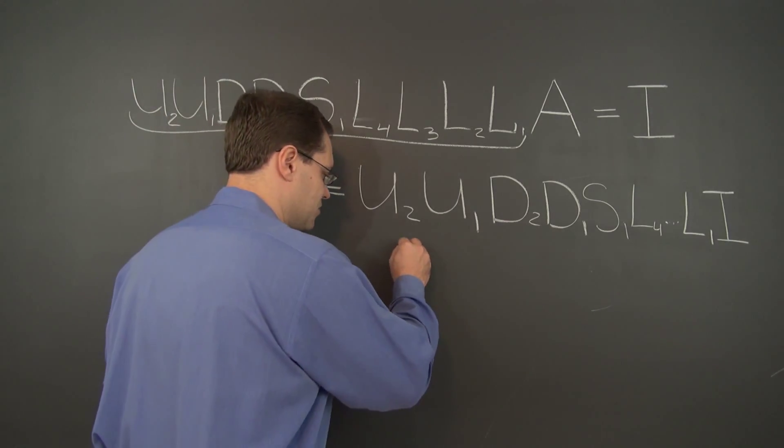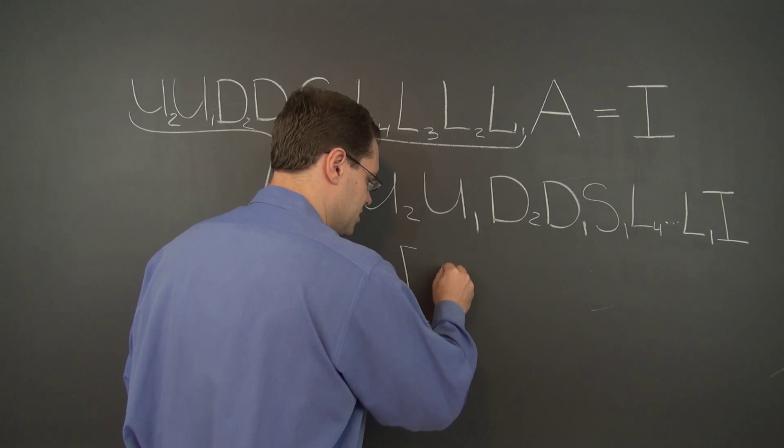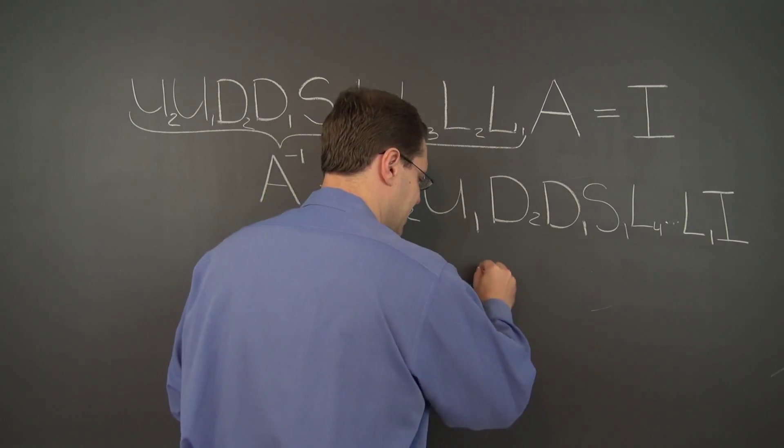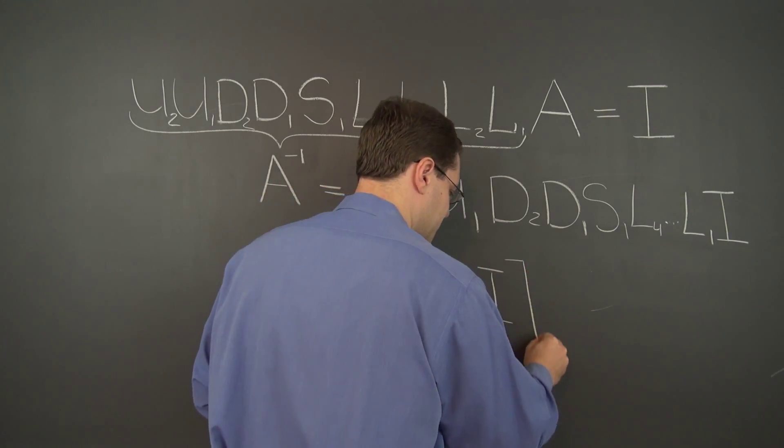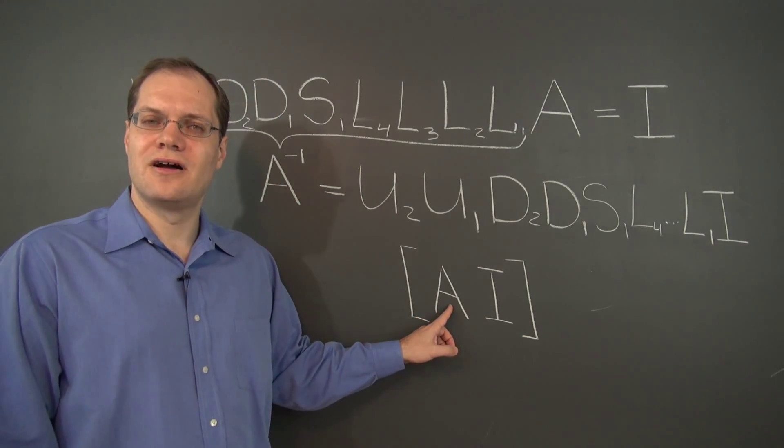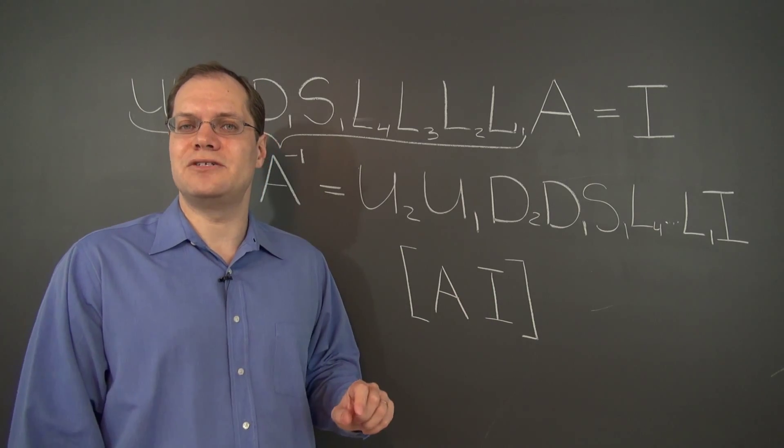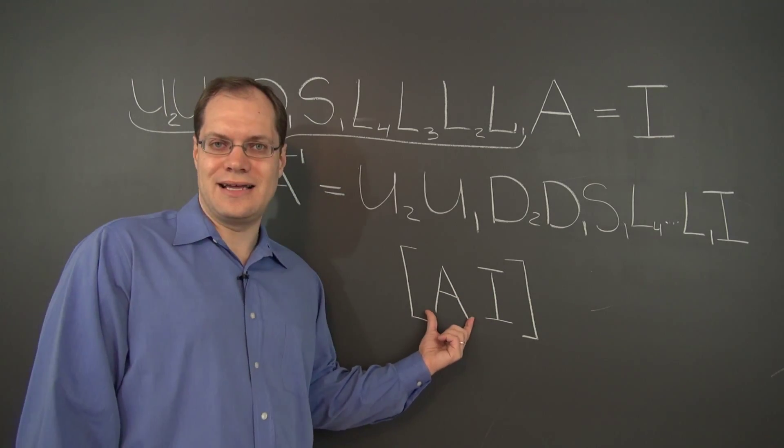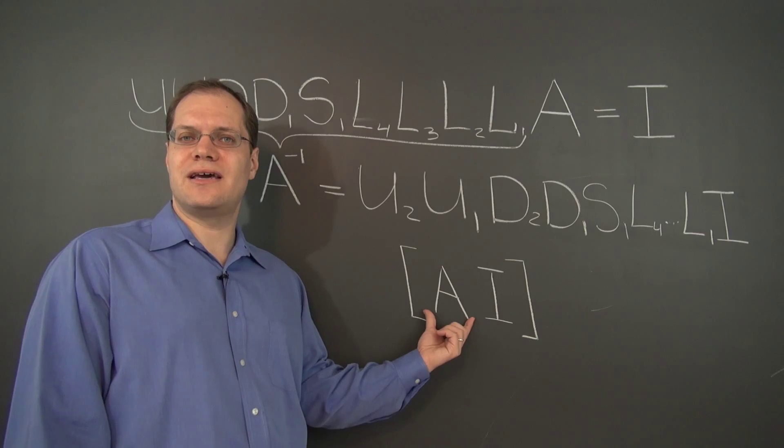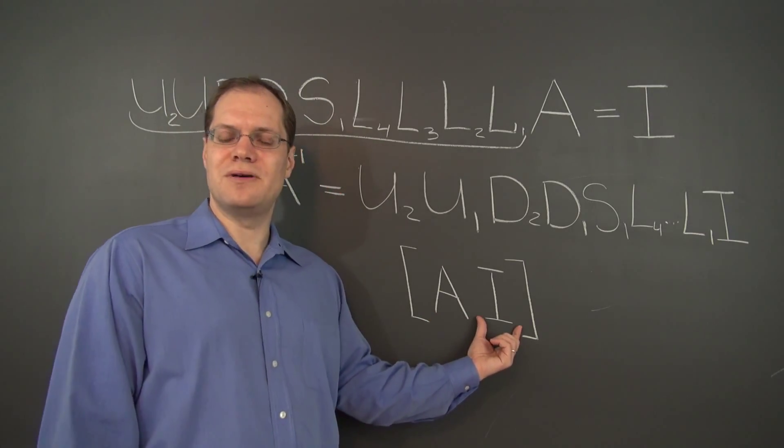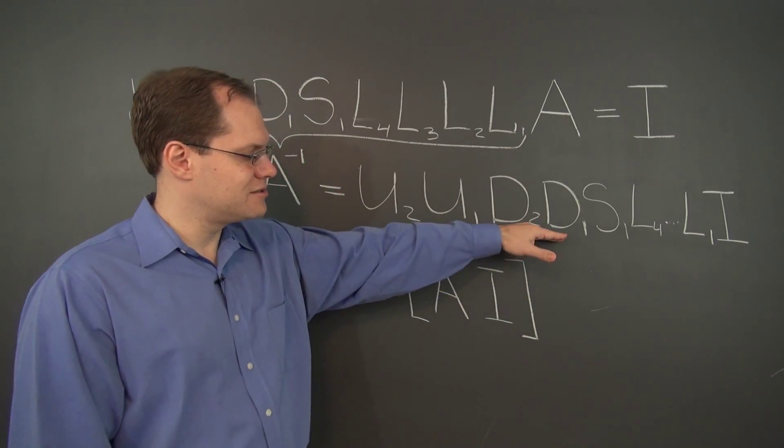And that's exactly what we do in the algorithm where we start with the matrix A and the identity matrix right next to it and start performing Gaussian elimination on A all along applying the same steps to the identity matrix. And by the time we're done Gauss eliminating the matrix A, this matrix becomes A inverse because of this.